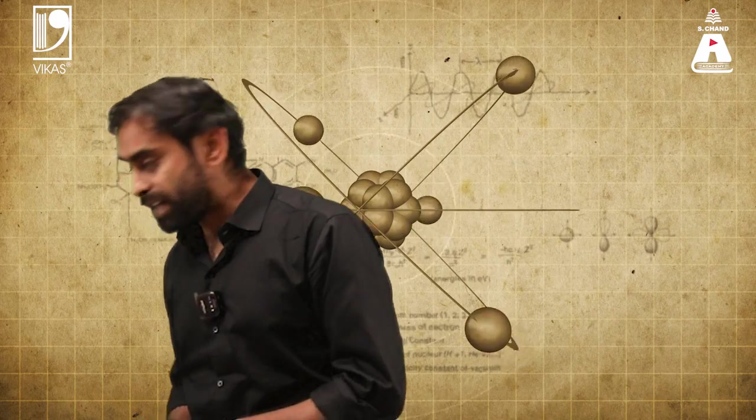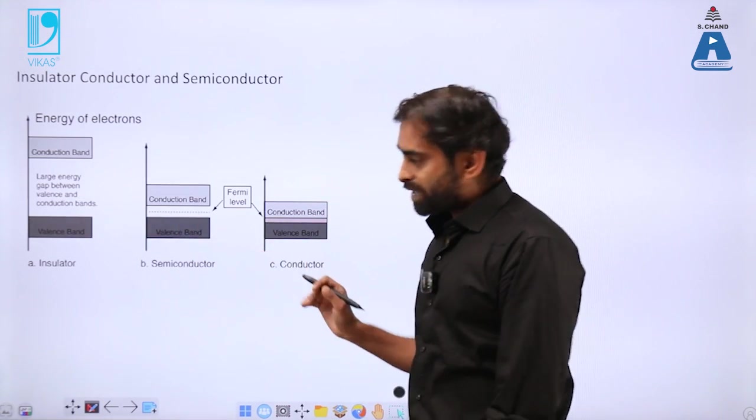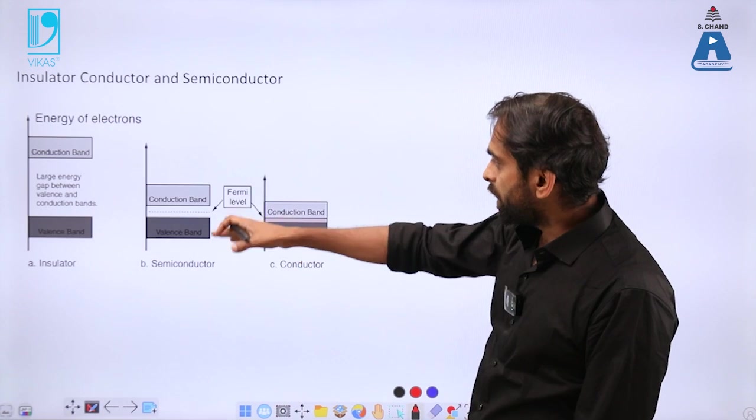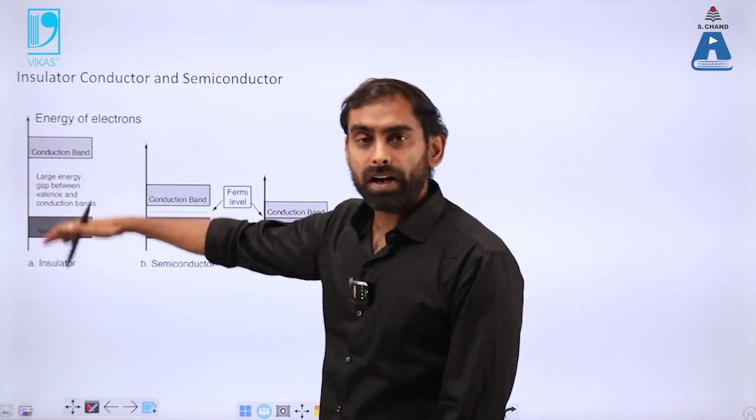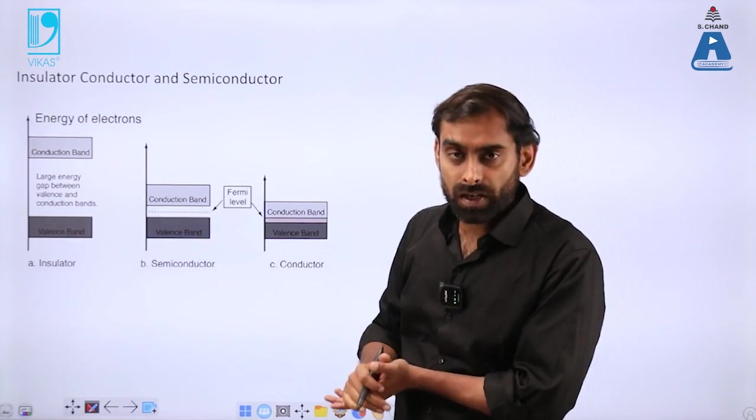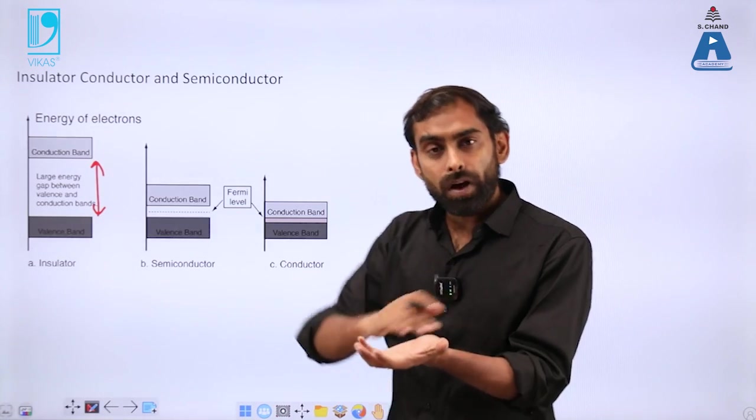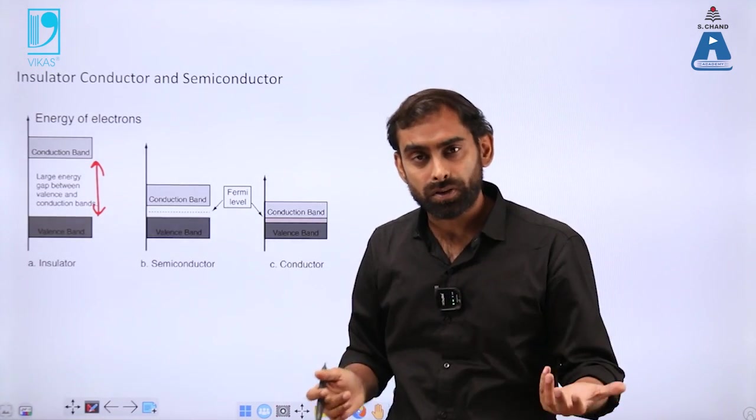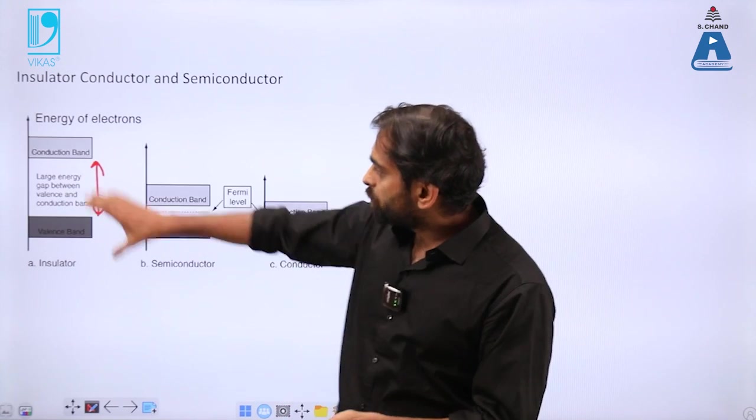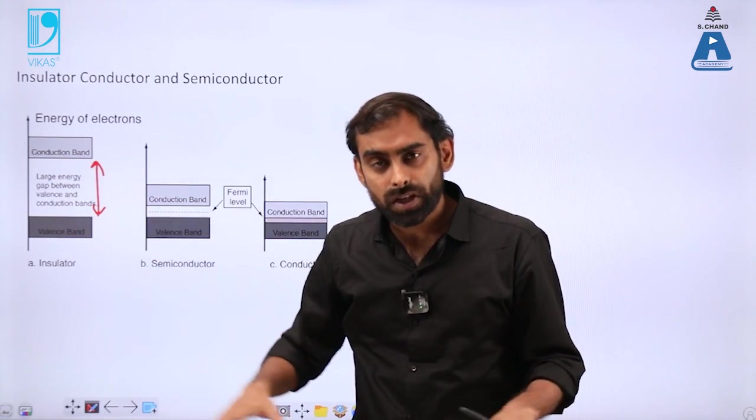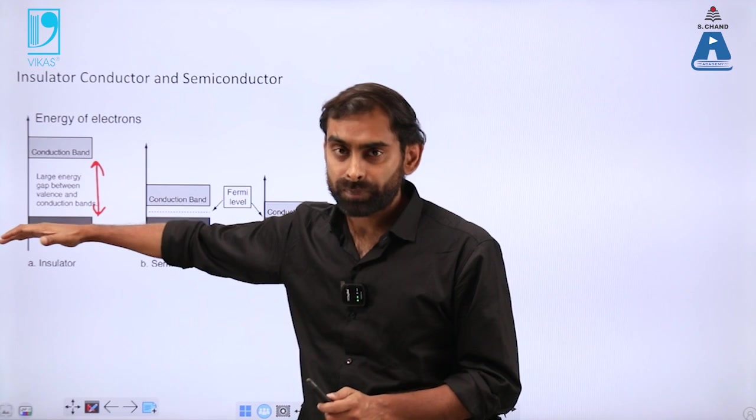This diagram helps to clearly distinguish between insulator, semiconductor, and conductor. In the case of an insulator, the valence band and conduction band are far away—the energy gap is very high. If we talk about stone or diamond, which is an allotrope of carbon, all atoms are well connected with valence electrons having a band of energy.